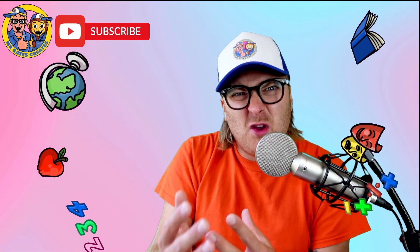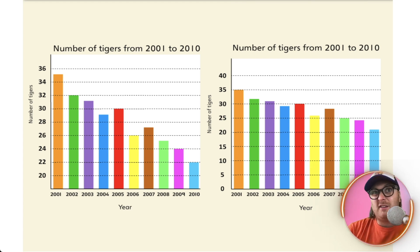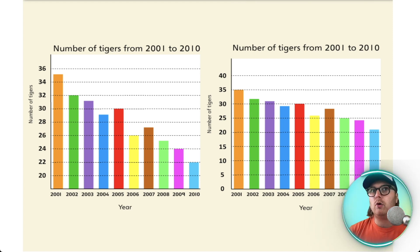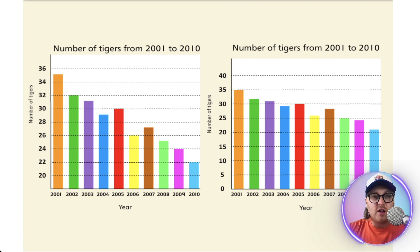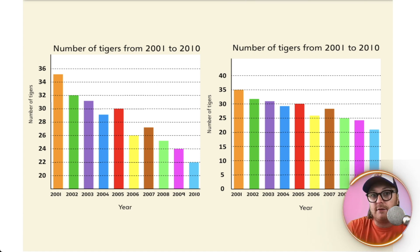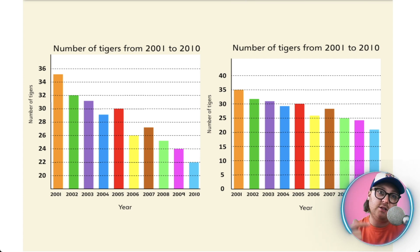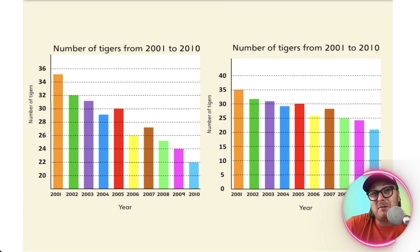I'm going to show you a block graph now to give you a better understanding. Here is an example of a block graph — nice and straightforward, really colourful. As you can see at the top it has a title. Really important: block graphs must have a title telling you what the information is all about. This one is 'number of tigers from 2001 to 2010.' We've got the y-axis going up and down and the x-axis going across. On this one the y-axis shows the number of tigers and the x-axis shows the years. The increments going up the side are 20, 22, 24, 26 — going up in twos. It doesn't always go up in ones; it can go up in twos, fives, or tens. So be really careful when looking at bar charts.